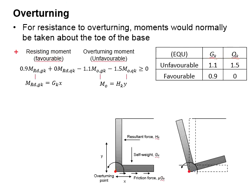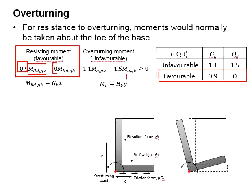For favorable moment resistance, which referring to the factor of safety here, 0.9 is to be multiplied with the GK and 0 is to be multiplied with the QK.